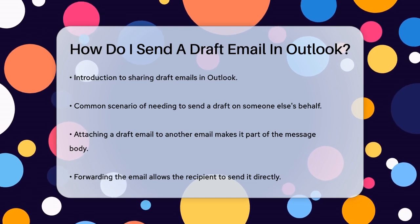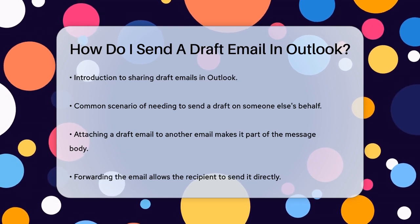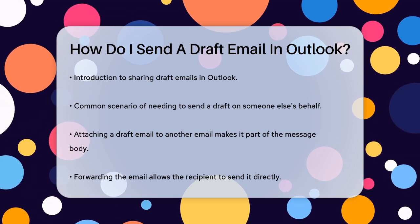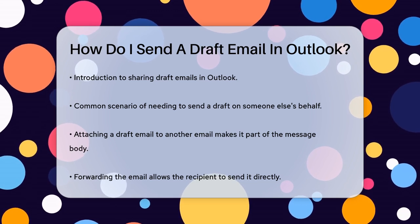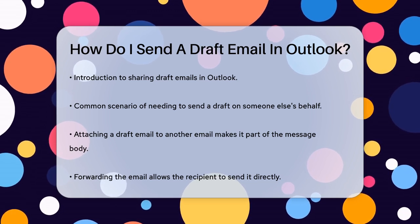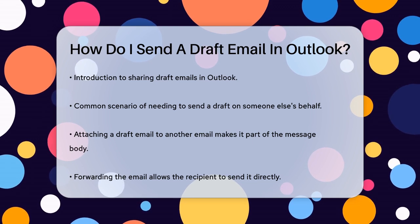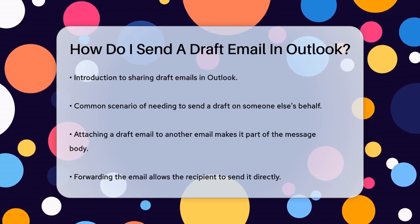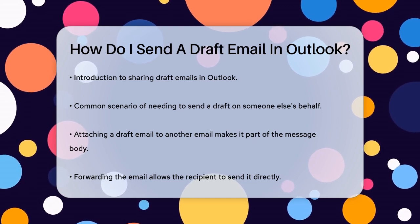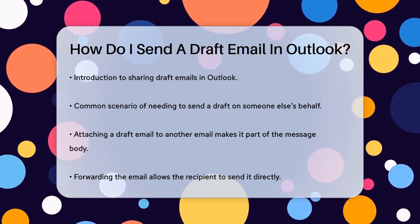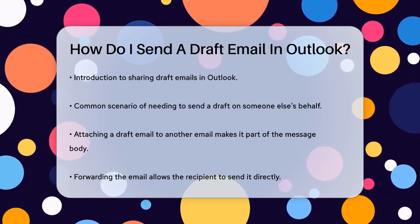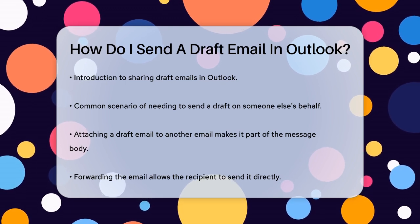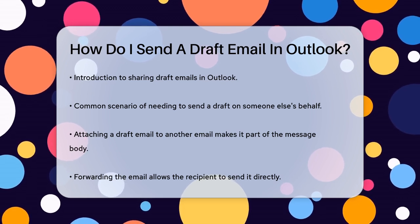When you attach a draft email to another email in Outlook, it becomes part of the message body and can't be sent separately. To allow someone else to send the attached email, you have a few options. First, you can forward the email instead of attaching it. This way, the recipient can open the forwarded email and send it directly.